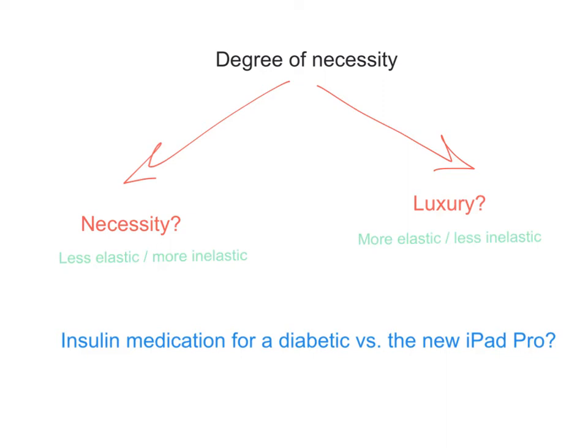This brings us to the third determinant of price elasticity of demand: the degree of necessity. If the product is really necessary and the consumer needs it, they're generally not going to care about the price — their demand will be quite inelastic. But if the product is a luxury for that consumer, their demand will be a lot more sensitive to price and will be more elastic. Whether something is a necessity or a luxury is not really a characteristic of the product itself — it depends on the consumer.